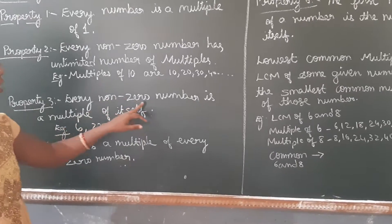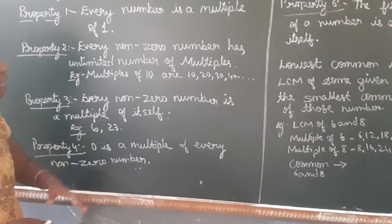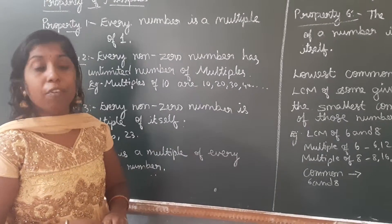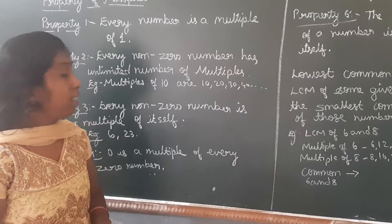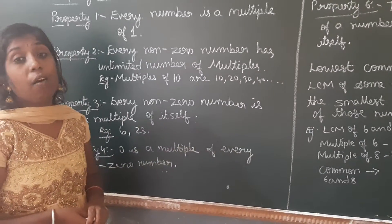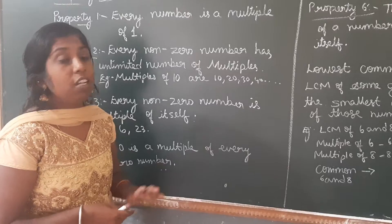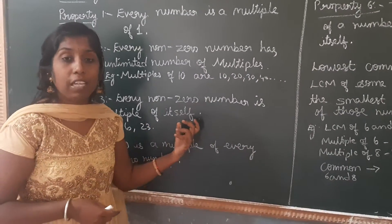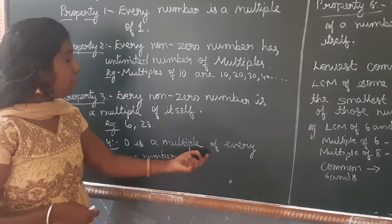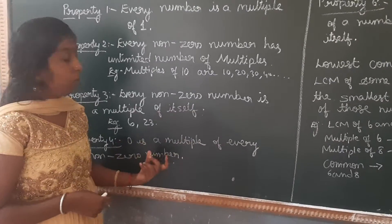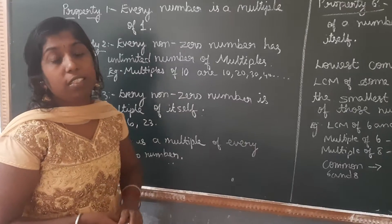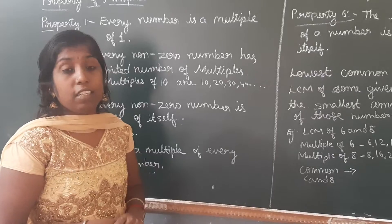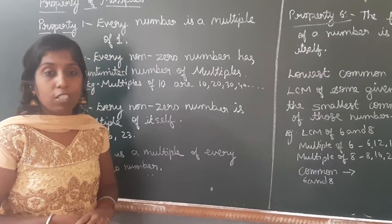Next property: every non-zero number is a multiple of itself. For example, 6 — 6 ones are 6, then it goes on. So every non-zero number is a multiple of itself. Property 4: 0 is a multiple of every non-zero number.